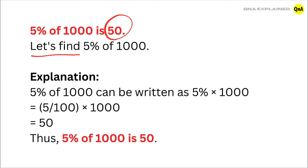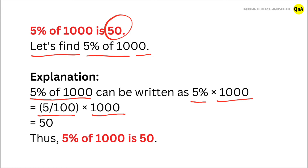Let's find 5% of 1000. 5% of 1000 can be written as 5% x 1000, which is 5 by 100 x 1000. Cancel out the zeros.